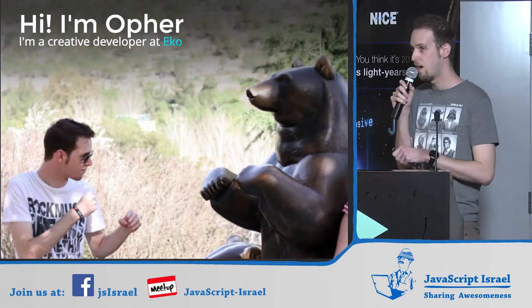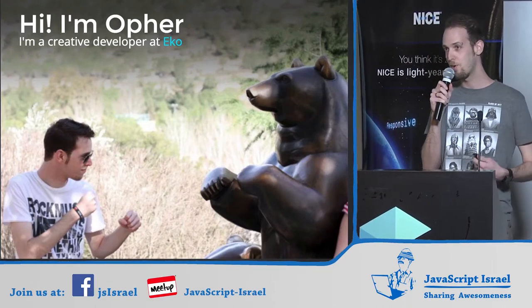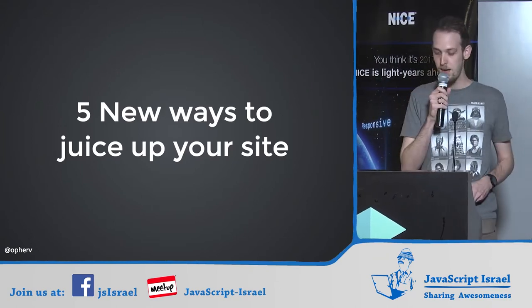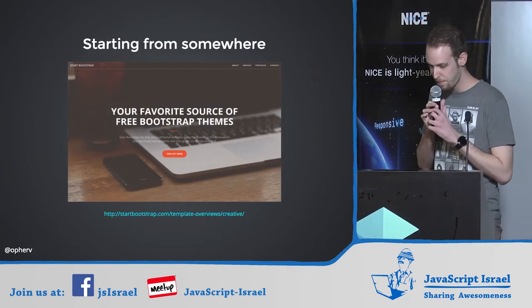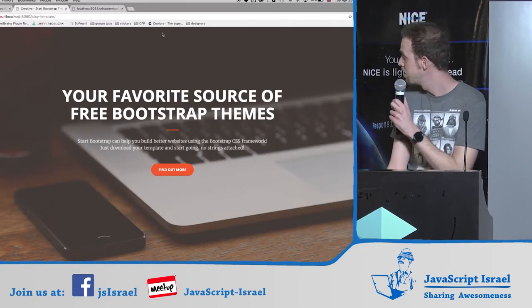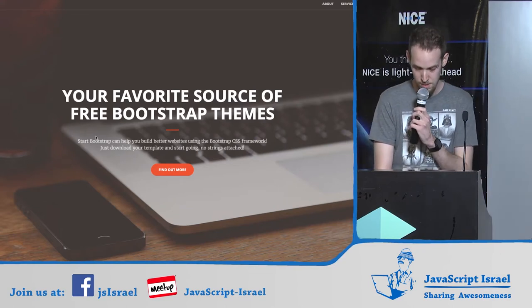My name is Offer. I'm a creative developer at a company called Echo. A creative developer is a normal developer but with design skills too — it's about testing all the different connection points between design and programming. Today, I'm going to show you five new ways to juice up your website. We'll start from a free open-source Bootstrap theme and apply all sorts of juicy things to it.